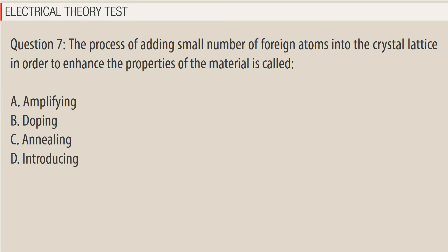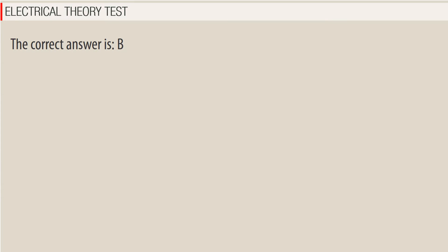Question 7. The process of adding a small number of foreign atoms into the crystal lattice in order to enhance the properties of the material is called: A. Amplifying. B. Doping. C. Annealing. D. Introducing. The correct answer is B — Doping.